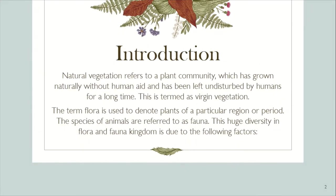Introduction: Natural vegetation refers to a plant community which has grown naturally without human aid and has been left undisturbed by humans for a long time. This is termed as virgin vegetation. The term flora is used to denote plants of a particular region or period. The species of animals are referred to as fauna. This huge diversity in flora and fauna is due to the following factors.